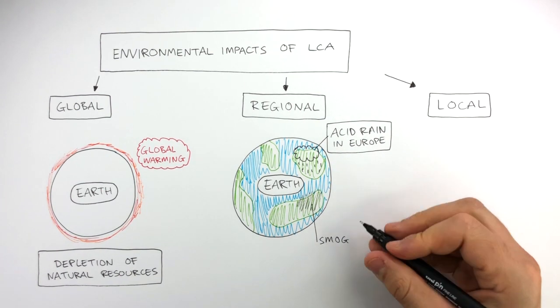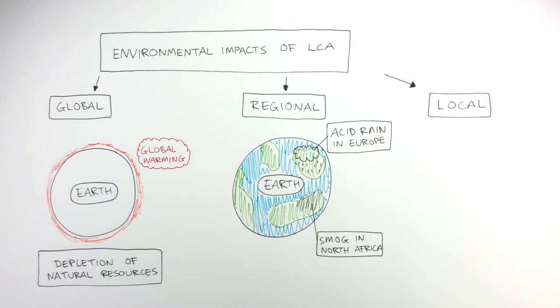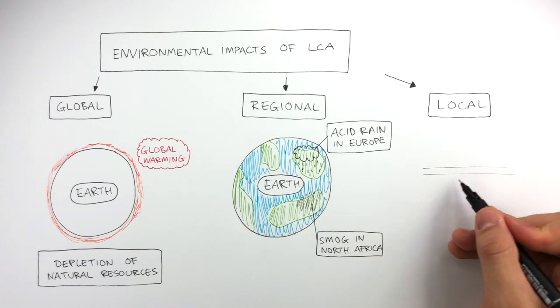Also, smog in say North Africa. North Africa is a large regional area. So acid rain and smog are examples of regional environmental impacts.